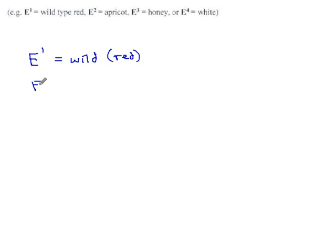And E², the next step down, is apricot, kind of an orangey-yellow color. E³ is a little browner. They call it honey color. And the most recessive is white.